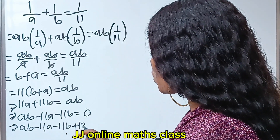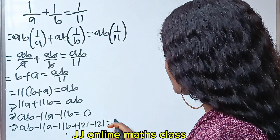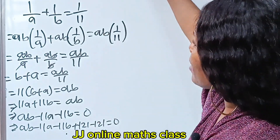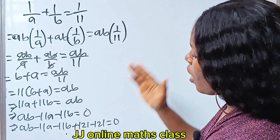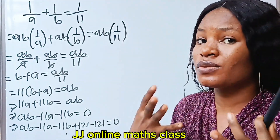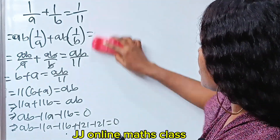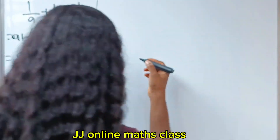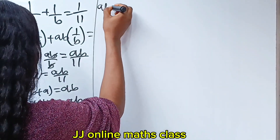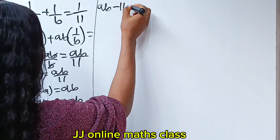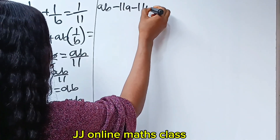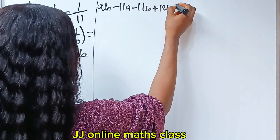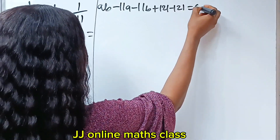So we have AB minus 11A minus 11B. Let's introduce 121 minus 121, which is equal to 0. Don't worry, I'm going to show you why I have to introduce 121 minus 121 — which is still 0. So this is all we have: AB minus 11A minus 11B plus 121 minus 121 is equal to 0.